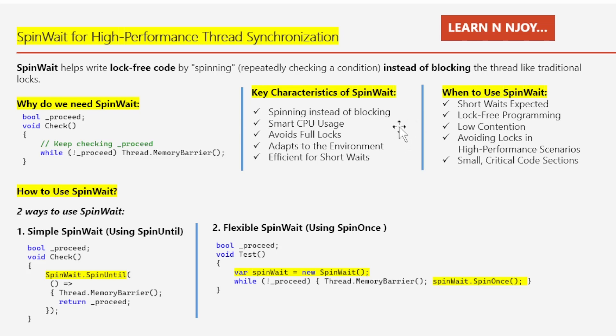Number three: avoid full lock — unlike a regular lock which stops other threads from accessing shared resources, SpinWait doesn't lock anything; it just keeps trying to move forward, making it faster and preventing bottlenecks. Number four: adapt to the environment — SpinWait adapts its behavior based on the system; on a single-core machine or virtual machine it yields more often so other threads can do their work. Finally, number five: efficient for short waits — SpinWait is great for scenarios where a thread expects to wait only for a short period of time, avoiding the overhead of traditional locks.